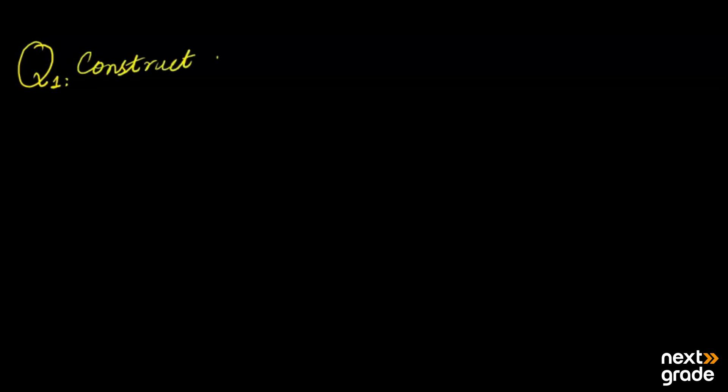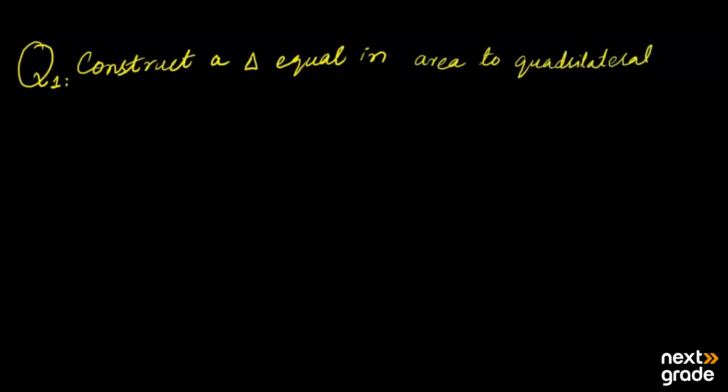Assalamu alaikum, I hope you all are fine and doing good. We will continue the previous lecture as we have discussed a question related to the procedure in which we draw equal area triangles in a quadrilateral shape. Here we will consider a question which we will solve properly. First, we will construct a triangle equal in area to the quadrilateral, which has the name PQRS.